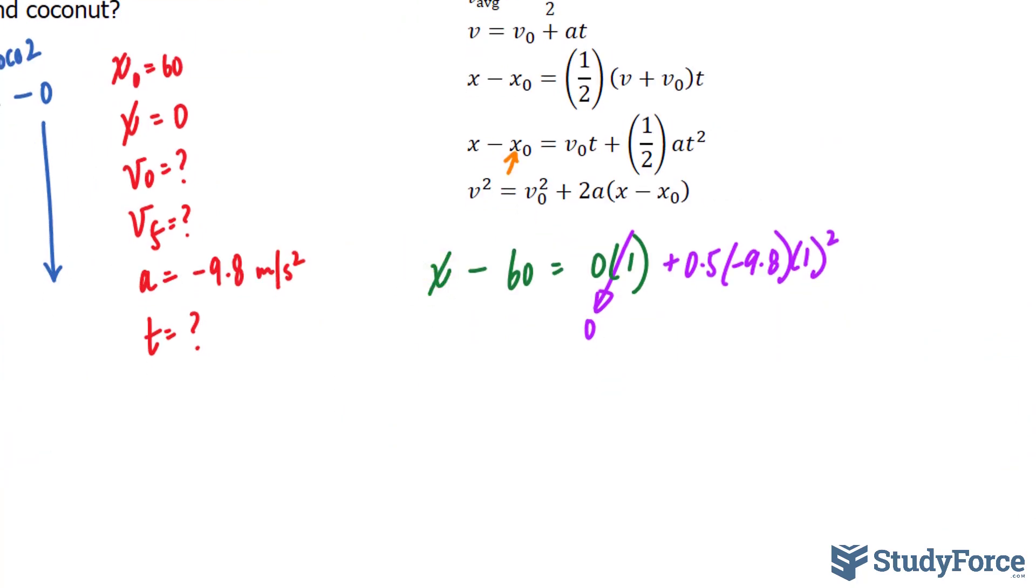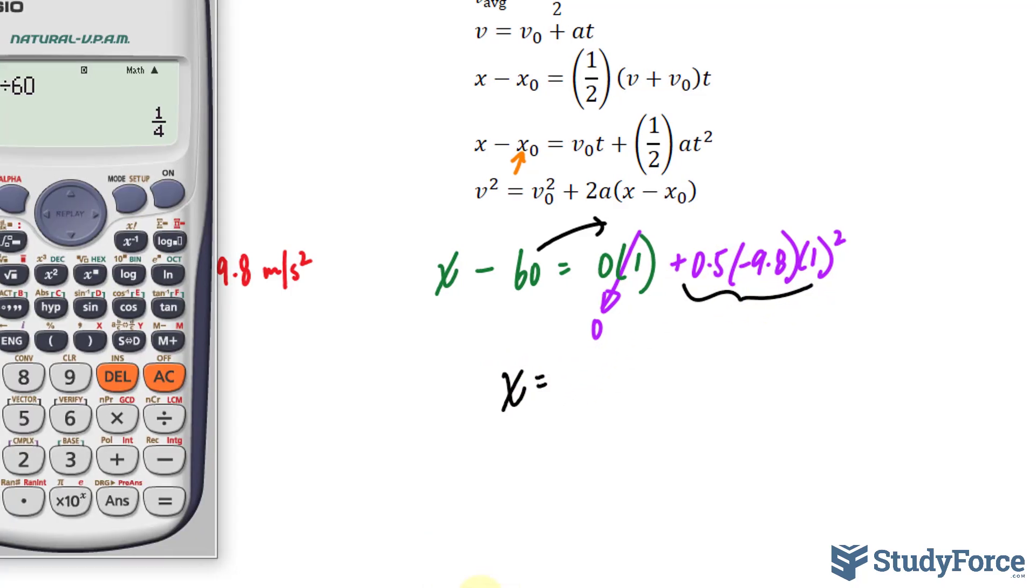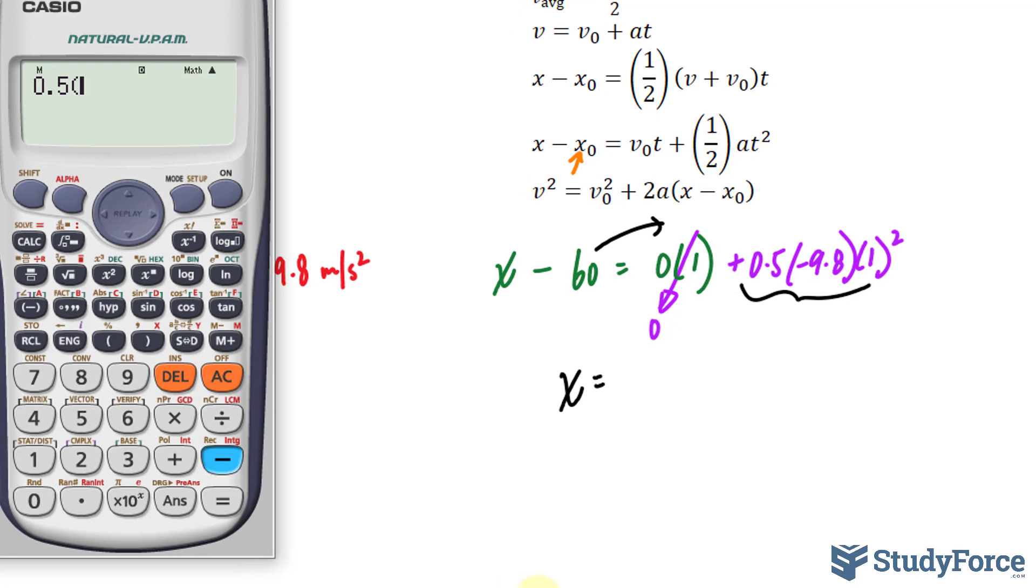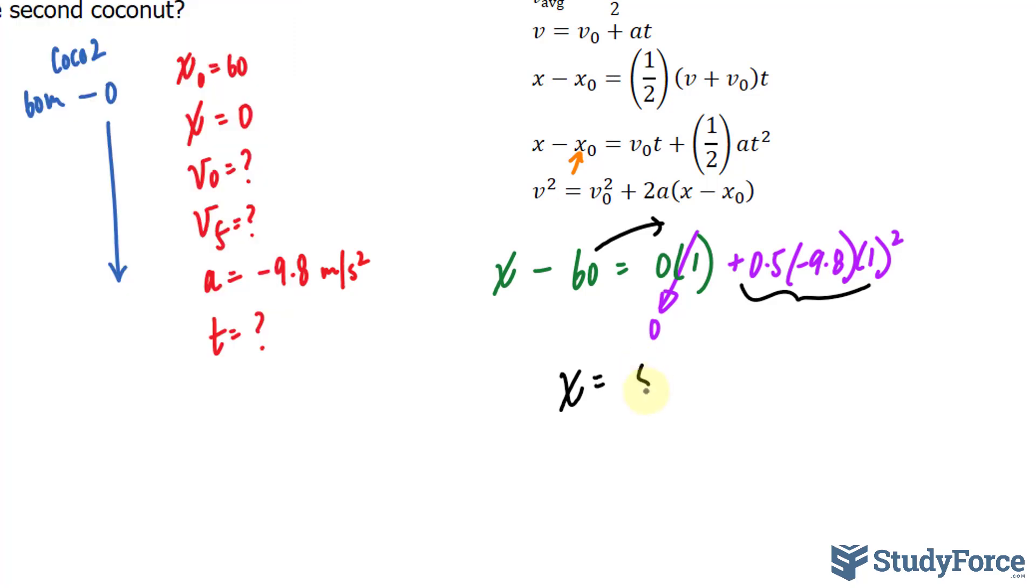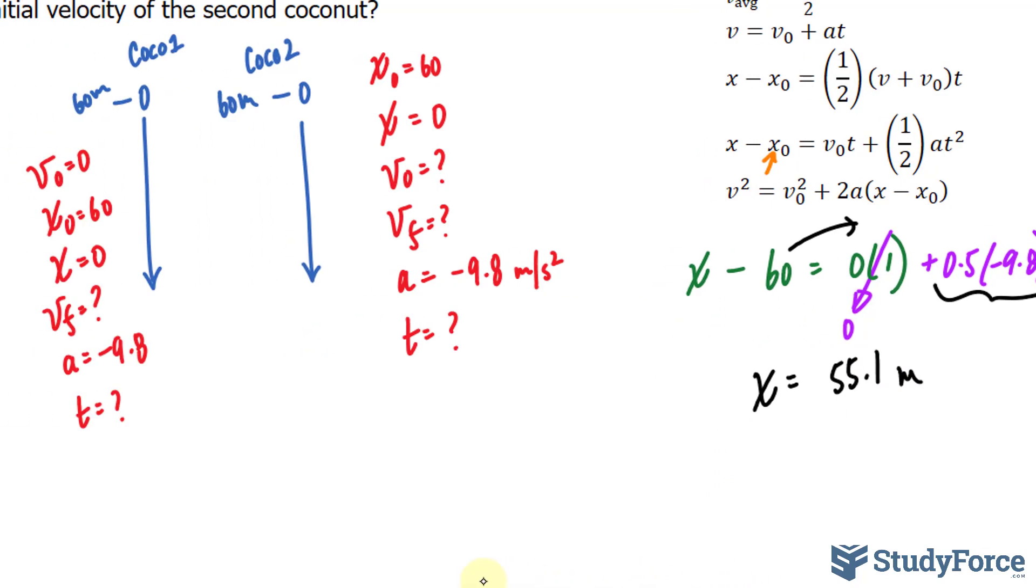Let's solve for x. We'll take that over. We have x equals all of these multiplied. Let's use our calculator: 0.5 times negative 9.8 times one raised to the power of two. And if we bring the 60 over, it becomes positive 60. So we end up with 55.1. After one second, the coconut is now 55.1 meters from the bottom.